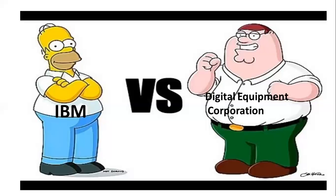Long ago, there was a fierce battle between IBM and Digital Equipment Corporation to become the leading computer manufacturer. But the problem was that the devices manufactured by these companies were not compatible with each other. So if you bought a computer from IBM, you needed to buy a monitor, printer, and every other accessory from IBM only. Similarly, if you bought a computer from Digital Equipment Corporation, you needed to buy printers, scanners, and monitors from Digital Equipment Corporation because of compatibility issues.